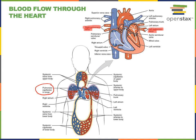Here we see the left pulmonary arteries represented in blue, which transport blood with a relatively low oxygen concentration from the heart to the left lung. There are also right pulmonary arteries transporting blood to the right lung.